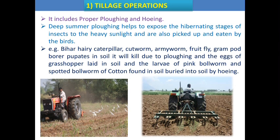During summer, deep summer plowing helps to change the soil layer. With the help of this change, the different life stages or hibernating stages of the insect — eggs, larvae, pupae, or adult — are exposed to the environment and heavy sunlight, causing them to become inactive. During plowing, birds behind the plow pick up and eat those hibernating stages. This is a simple technique to reduce the pest population.